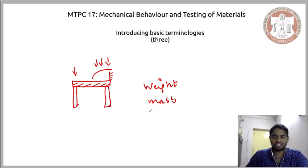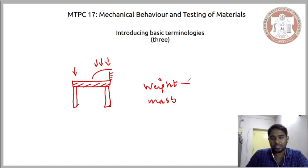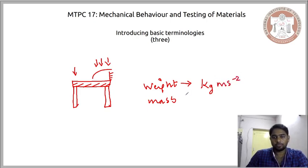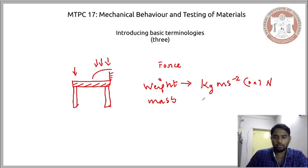While mass is a scalar term — it simply quantifies the amount of material — weight is a force, it is a vector term. It generally includes an acceleration term, which in our case would be the acceleration due to gravity. So mass, which is scalar, just quantifies the amount of material. Weight includes mass along with the acceleration due to gravity: mass in kg times acceleration in m/s² gives units of kg·m/s², or what we commonly refer to as Newtons. When we talk about weight in the context of mechanical behavior, we also refer to it as load.